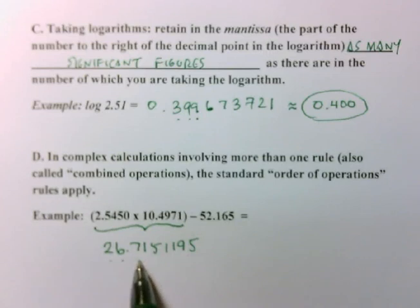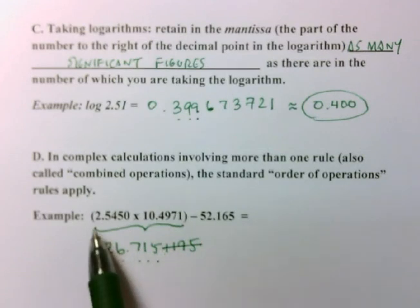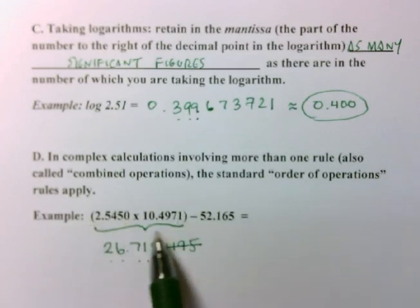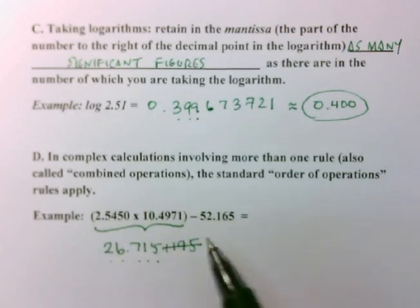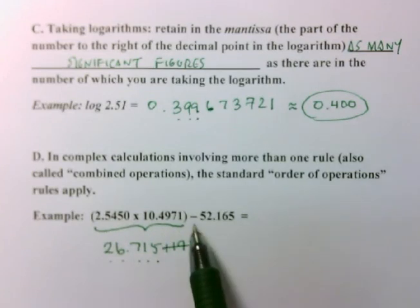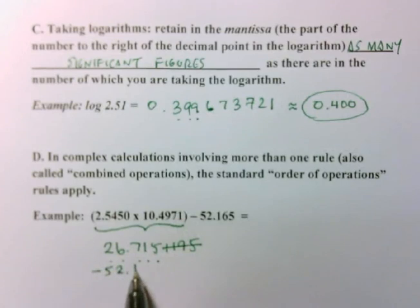One, two, three, four, five. And I'm going to get rid of all the rest of that. So that is the result from this parenthetical calculation. Now, I have this second step. The second in my order of operations is to subtract 52.165.